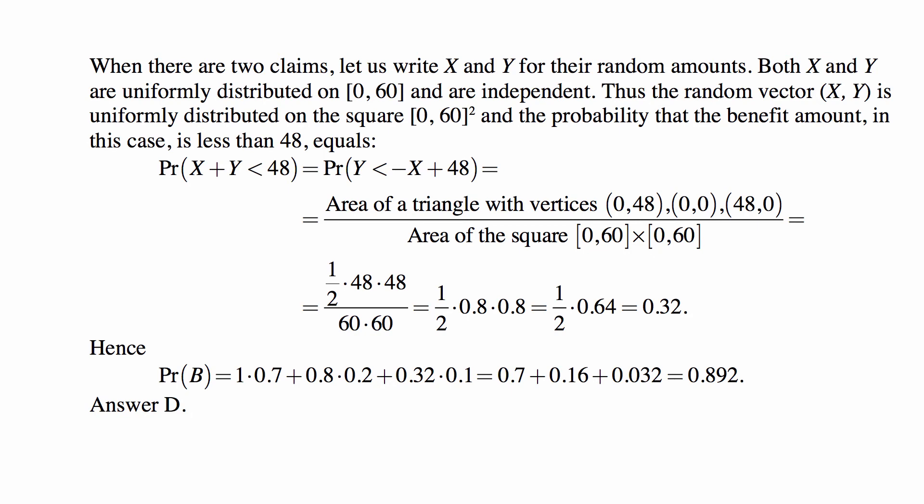Well, the line where Y is equal to -X + 48 is a straight line with a slope of negative 1, intersecting the Y axis at the point where Y is equal to 48, intersecting the X axis at the point where X is equal to 48, and we're looking for the area under that line, which is a triangle with vertices (0,48), (0,0), and (48,0).